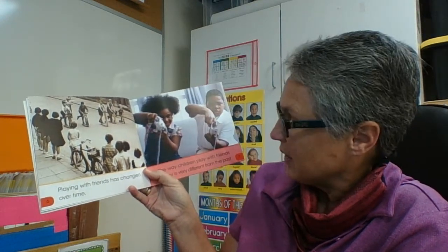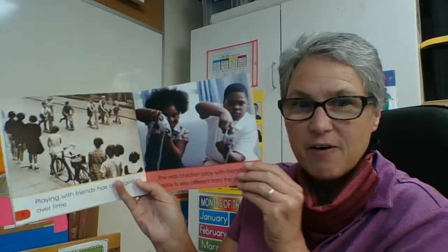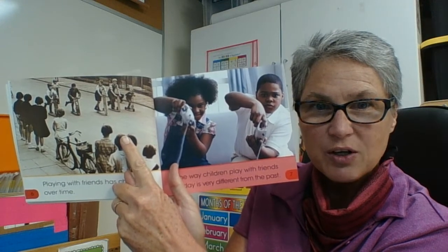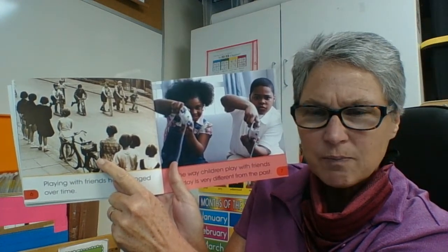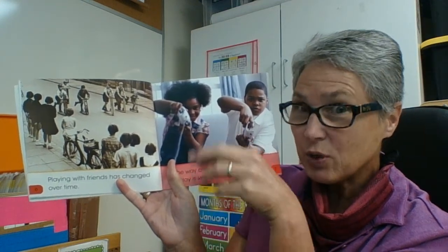Playing with friends has changed over time. The way children play with friends today is very different from the past. In the past, I can see in this black and white picture the children are playing on scooters — I have a scooter — and there's a bicycle. So that doesn't seem too different. But here these children are playing an electronics game, and that wasn't invented in the past. That's pretty recent.